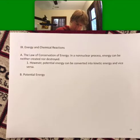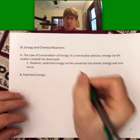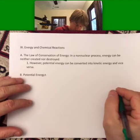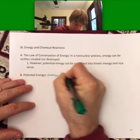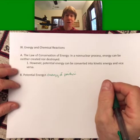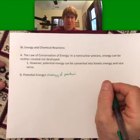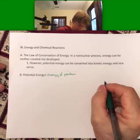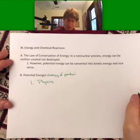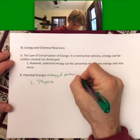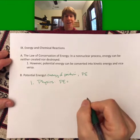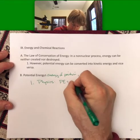So let's talk about potential energy. Potential energy is energy of position, and both potential and kinetic energy are very important for chemistry. If we were in a physics class, the equation for potential energy, abbreviated PE, is PE equals mass times gravity times height: M times G times H.